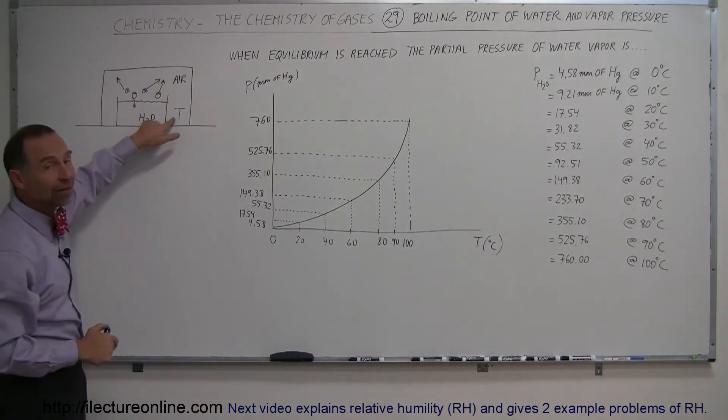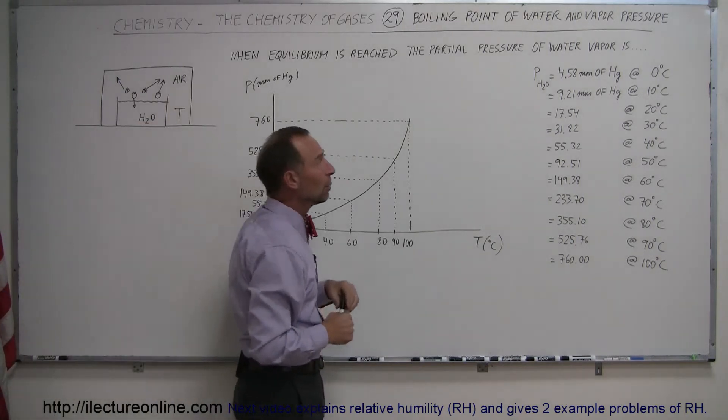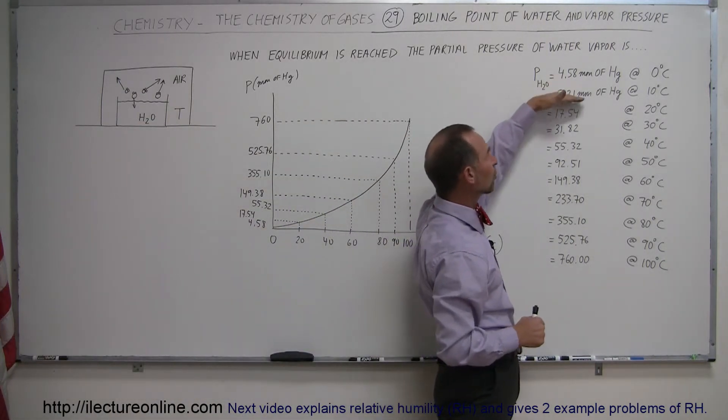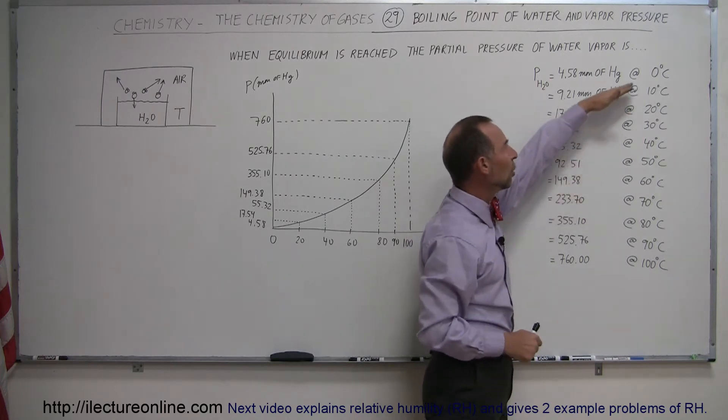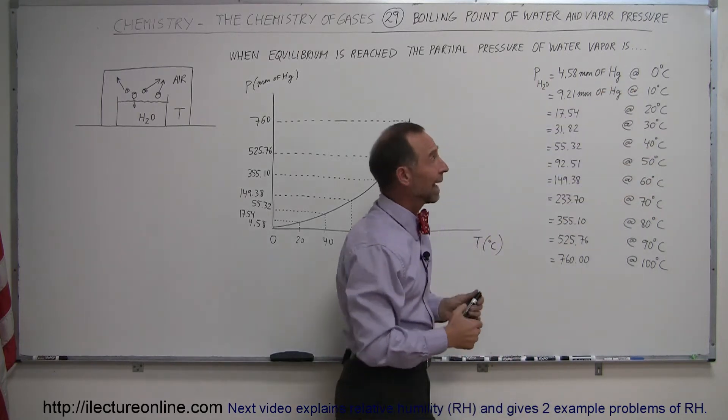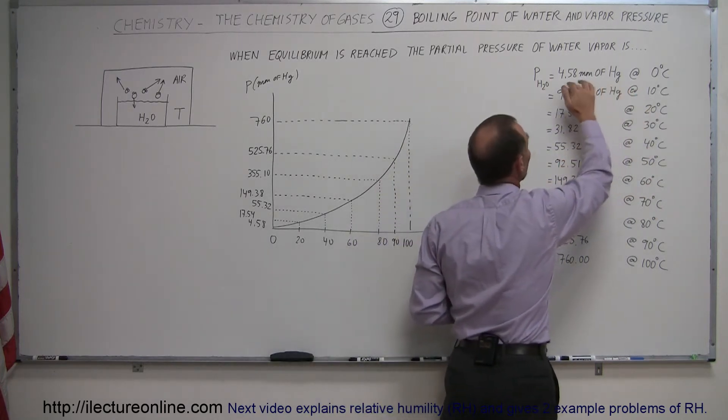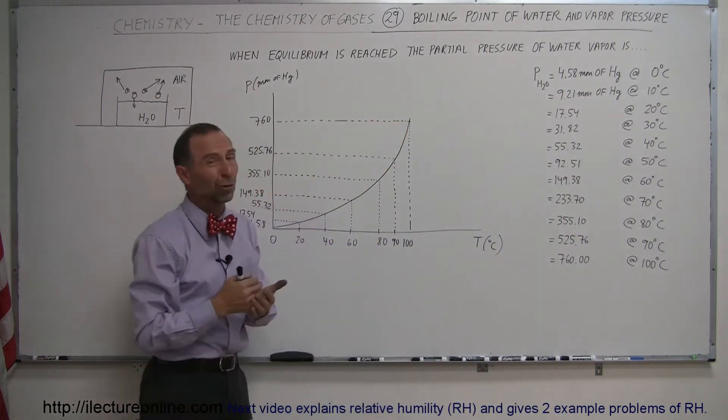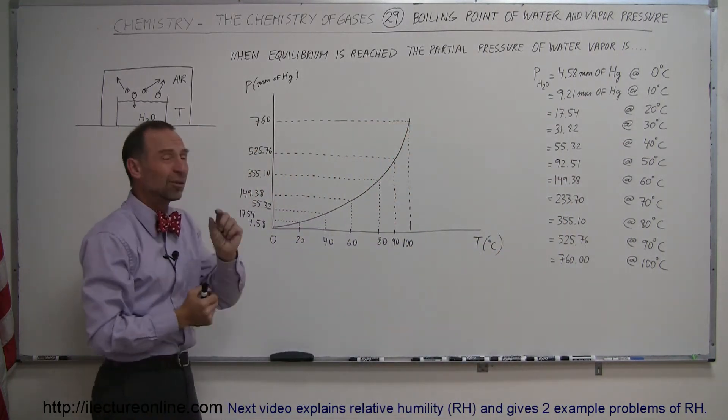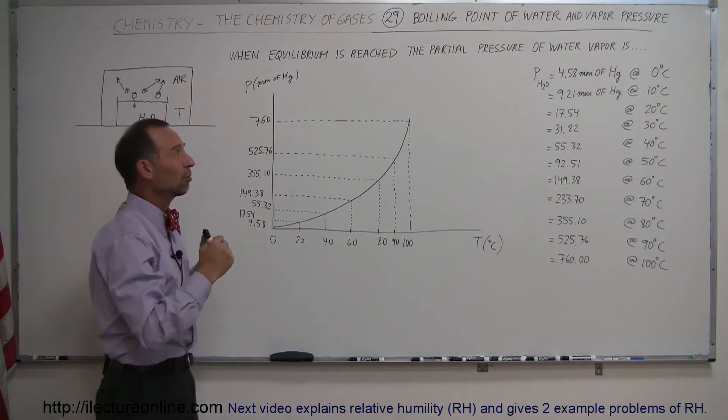And that depends upon the temperature of the air. As we can go over here, we notice that the amount of the partial pressure of the water vapor will increase with increasing air temperature. At zero degrees centigrade, the partial pressure of moisture in the air of water vapor is only 4.58 millimeters, which is about 0.6% of the total pressure of the air.